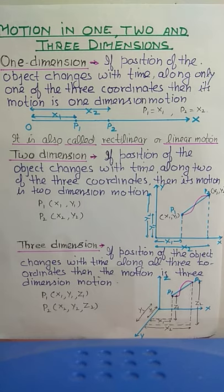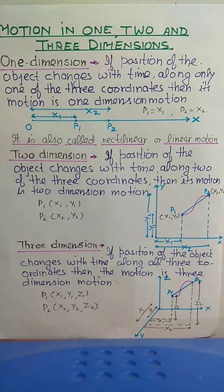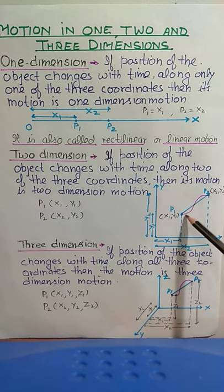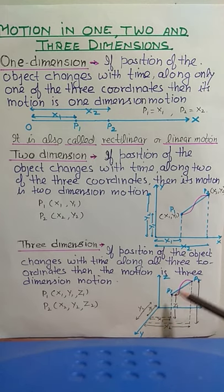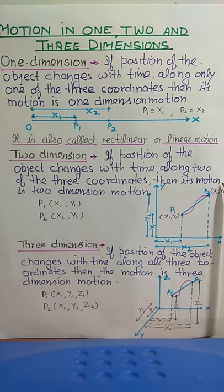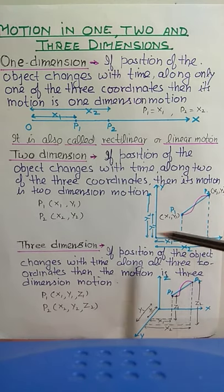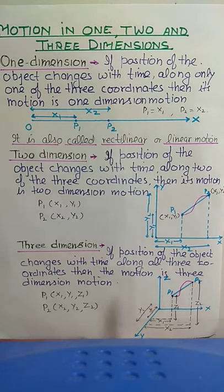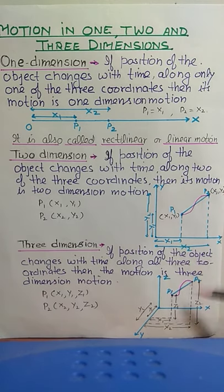To summarize: one straight wire represents one-dimensional motion; a straight road we travel on is one-dimensional motion. A table top surface represents two-dimensional motion. If a bird flies or a fish swims in water, that is three-dimensional motion. Motion can be along a straight line or a curved path — but the coordinates remain the same regardless of the type of path, whether straight or curved, as shown in these figures.